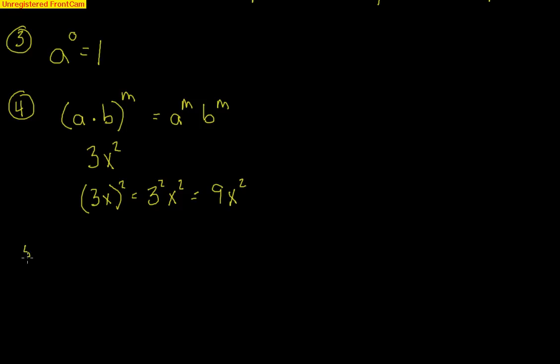We also have the next rule, which is a power to a power. So if we have a to the m raised to the n, then that is when you multiply. You have a to the m times n. So a quick example of that, if we have x to the 3rd raised to the 6th, think about that. We have xxx on the inside. So that's 3 x's, 6 times. That's obviously a total of 18 x's, x to the 18th.